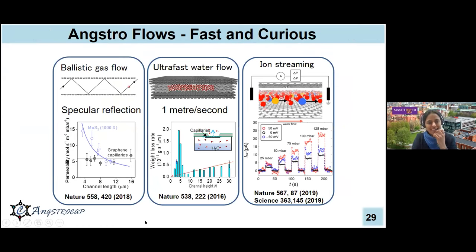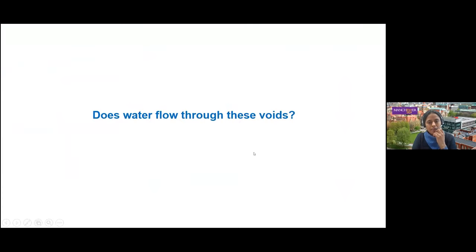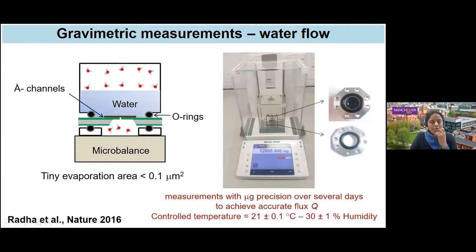Let me switch gears back to angstrom-scale capillaries, now looking at liquid flows. The most important liquid is water. We wanted to know first whether water flows through these capillaries. We flow the water and measure the output using microgravimetry. Basically, we have a silicon nitride chip with capillaries covering a simple aluminum container of water. If you leave this container open, the water will evaporate and the weight will reduce.